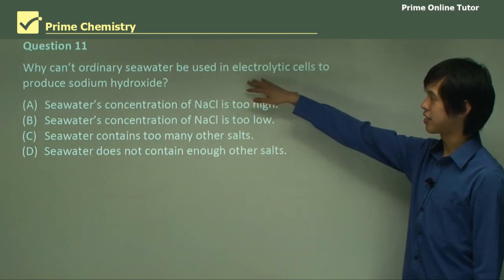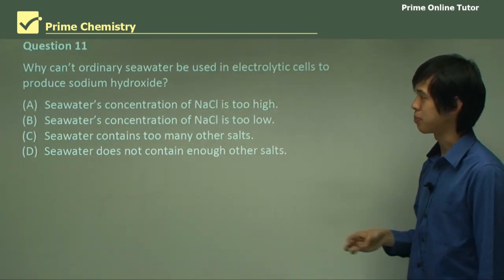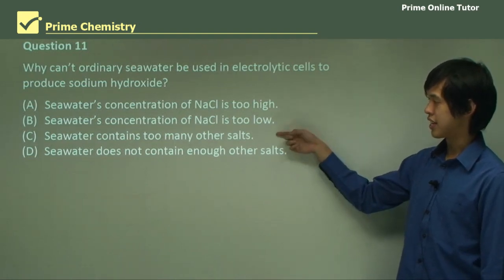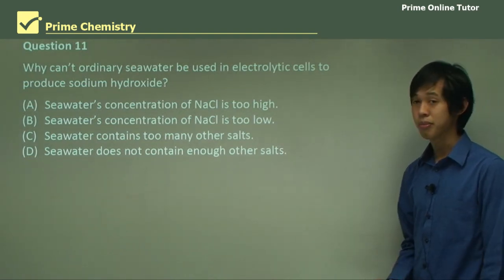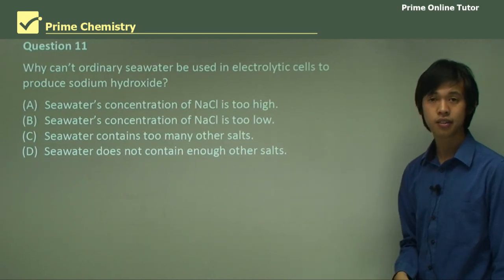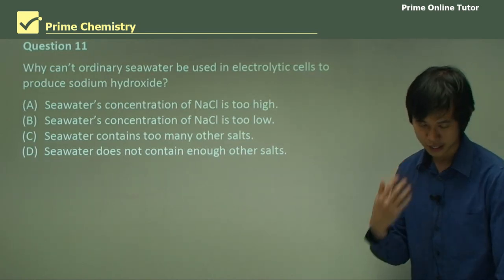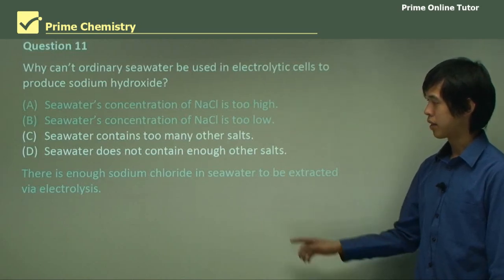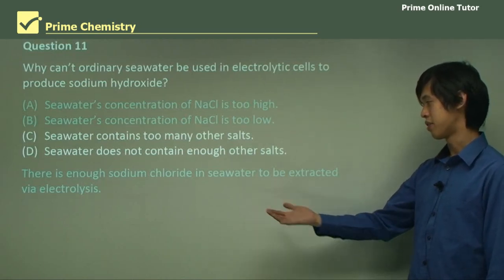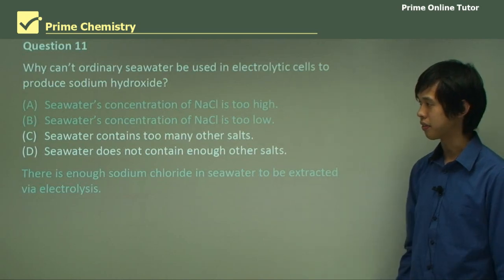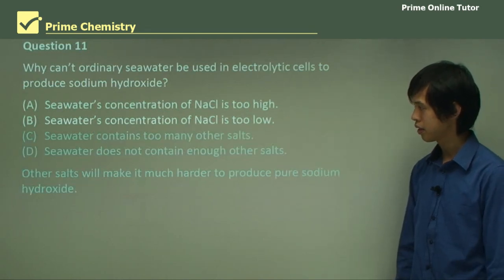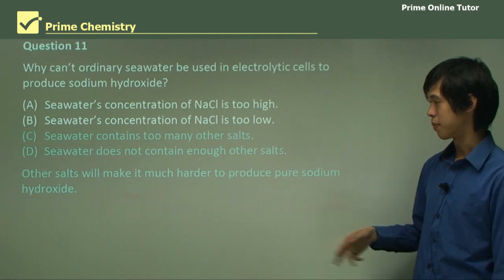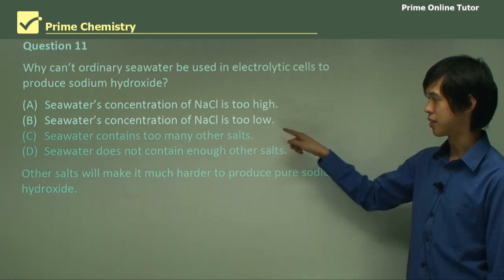Question 11: why can't ordinary seawater be used in electrolytic cells to produce sodium hydroxide? The answer is C — seawater contains too many additional salts other than NaCl, which makes the electrolysis more difficult. There is enough sodium chloride in seawater to be extracted via electrolysis, so the first two options are wrong. Other salts make it harder to produce pure sodium hydroxide, so the answer is clearly C.